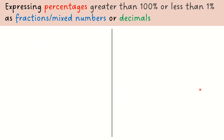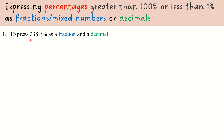Let us continue to learn how to express percentages into fractions, mixed numbers, or decimals. In this particular slide, we are looking at expressing percentages that are greater than 100% or less than 1% — meaning very large or very small percentages. Unlike earlier, we kept to numbers between 0 and 100.